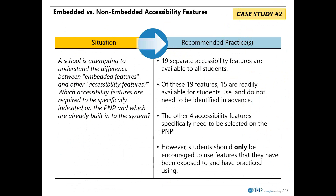Also, there are six additional accessibility features that are classified as administrative considerations and are covered earlier in this webinar. These six features are not built into the TestNav platform. Rather, they are things that a school has to decide ahead of time in order to make scheduling work, such as small group testing, separate location, time of day, etc. These six features must also be identified in advance on the PNP.